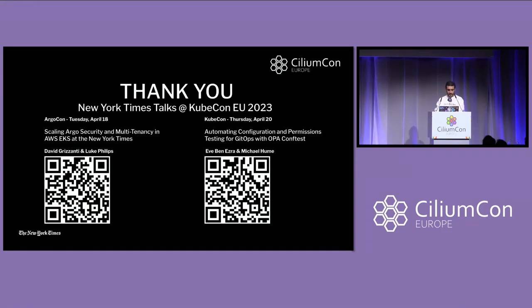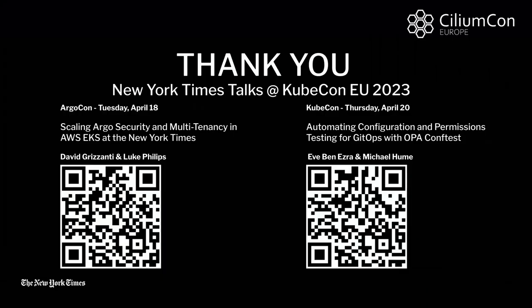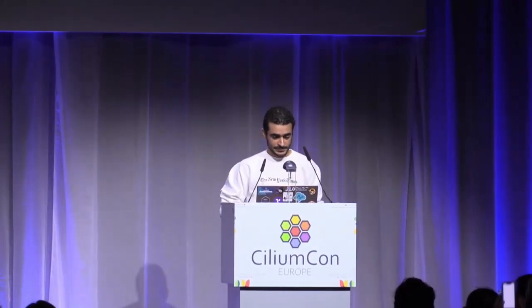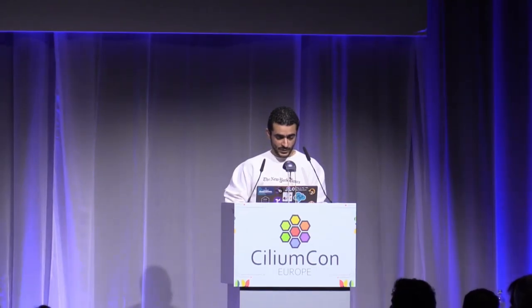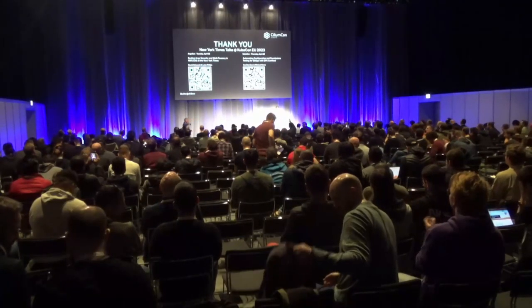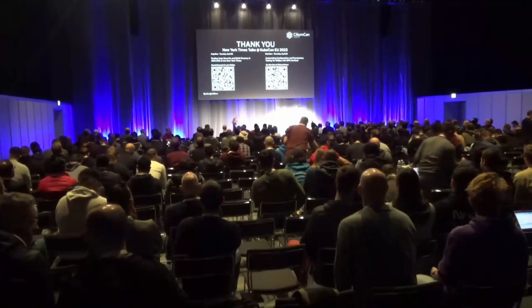I believe that's about all. I'm joined here by my colleagues. We're going to have other talks from the New York Times — talking about Argo and how we deployed it at the New York Times, and also talking about OBA later on Thursday about using it for testing and GitOps. Thank you.